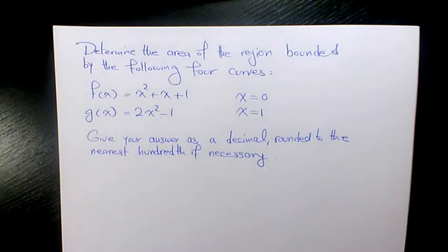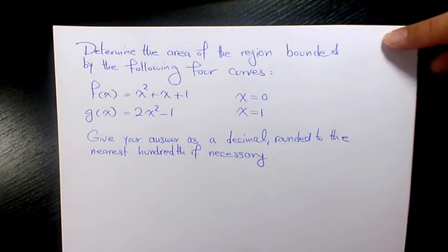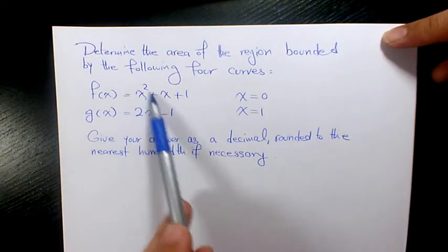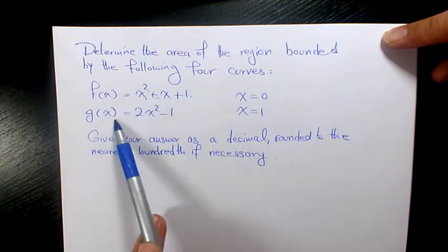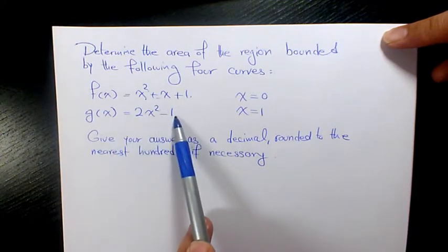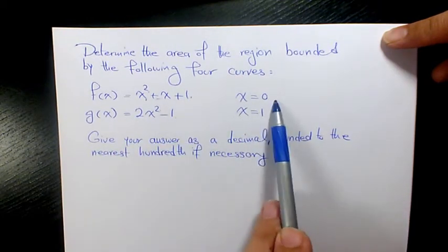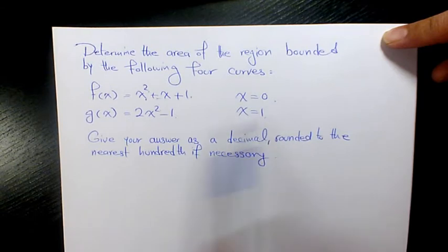In this video I want to show you how to determine the area of the region bounded by the following four curves: f(x) equals x squared plus x plus 1, g(x) is 2x squared minus 1, and x equals 0 and x equals 1. Give your answer as a decimal rounded to the nearest hundredth if necessary.